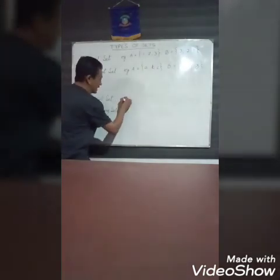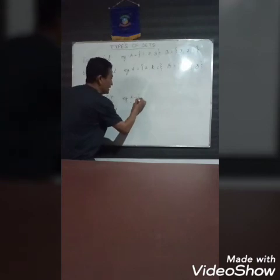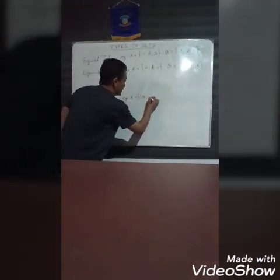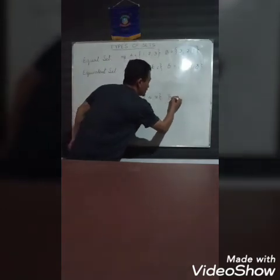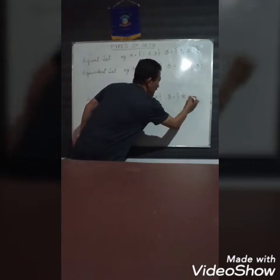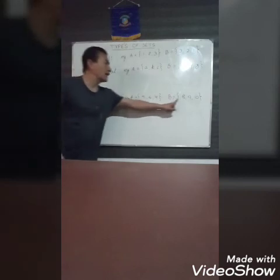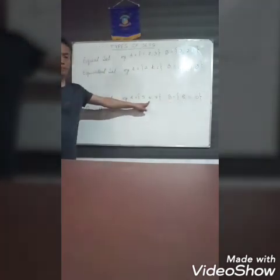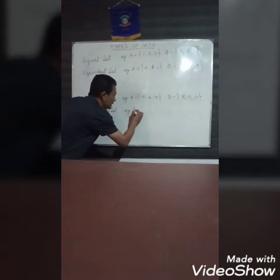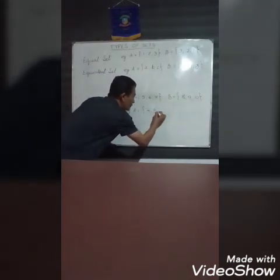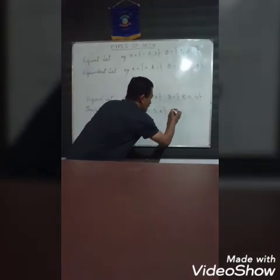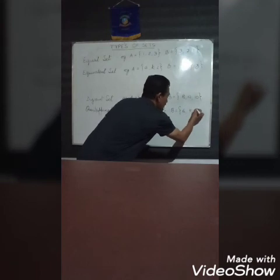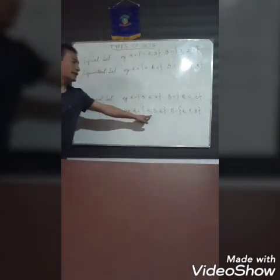Coming to disjoint sets and overlapping sets. Let's say set A is {5, 6, 7} and set B is {8, 9, 10}. None of the elements are common, that's why we call it a disjoint set. Whereas in overlapping sets, let's say set A is {4, 5, 6} and set B is {6, 7, 8}. Here, 6 is common to both of them, therefore they are called overlapping sets.